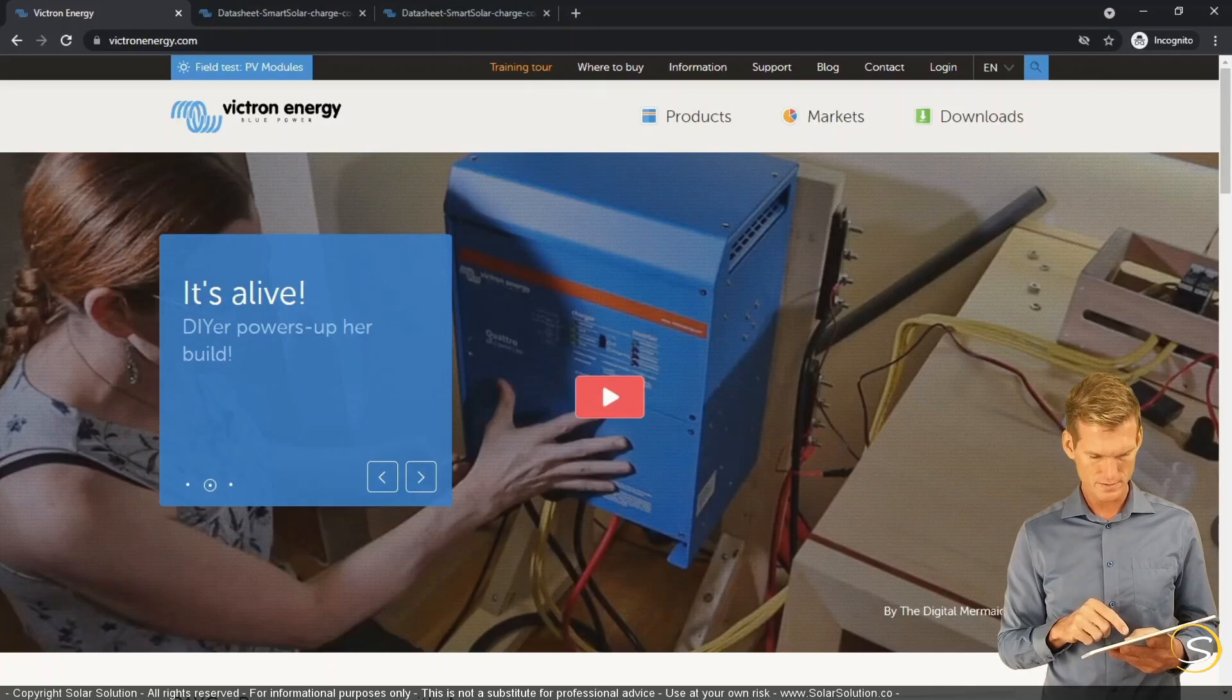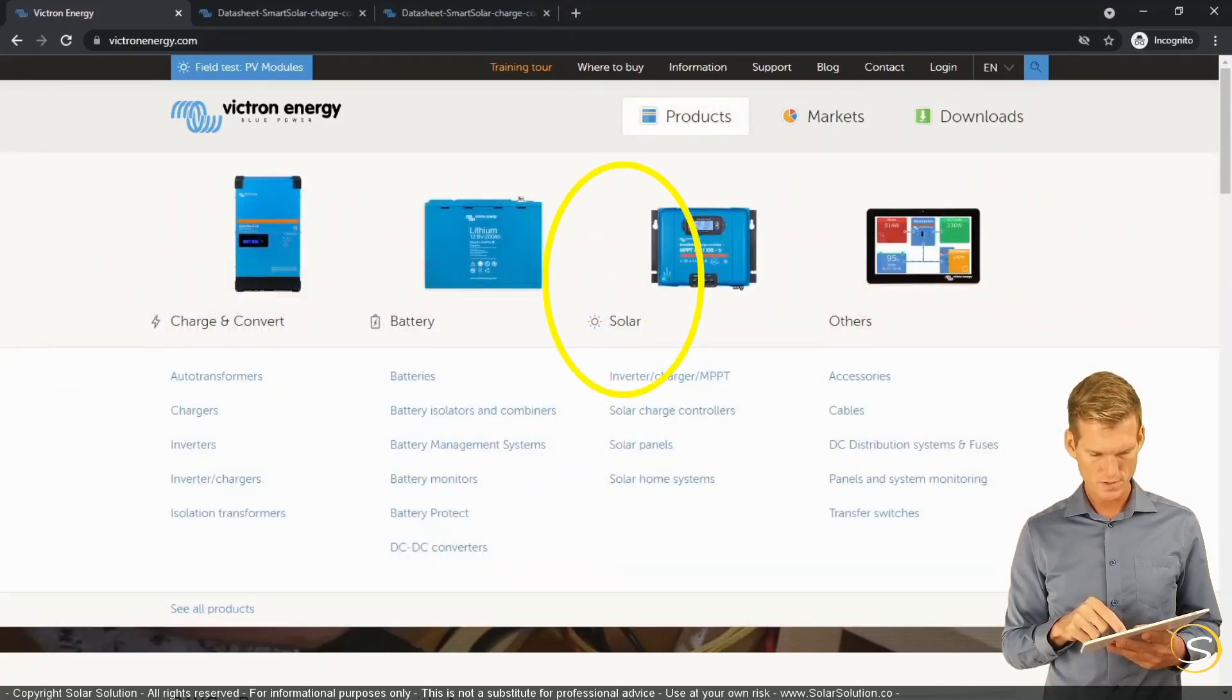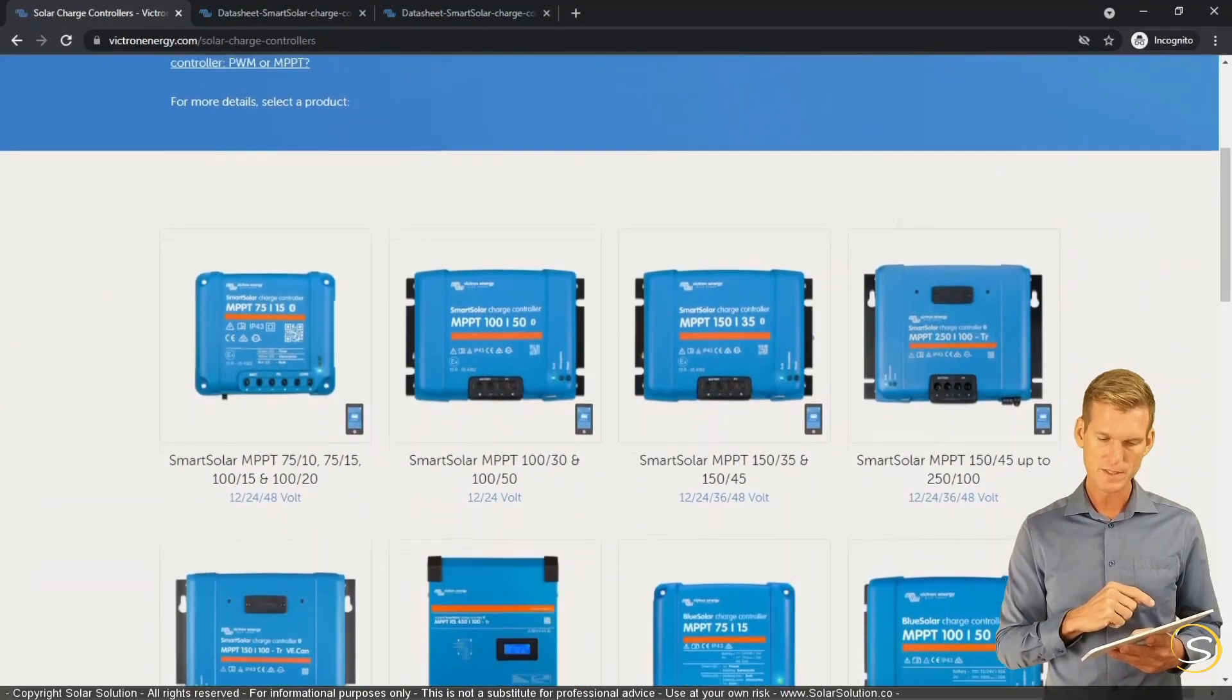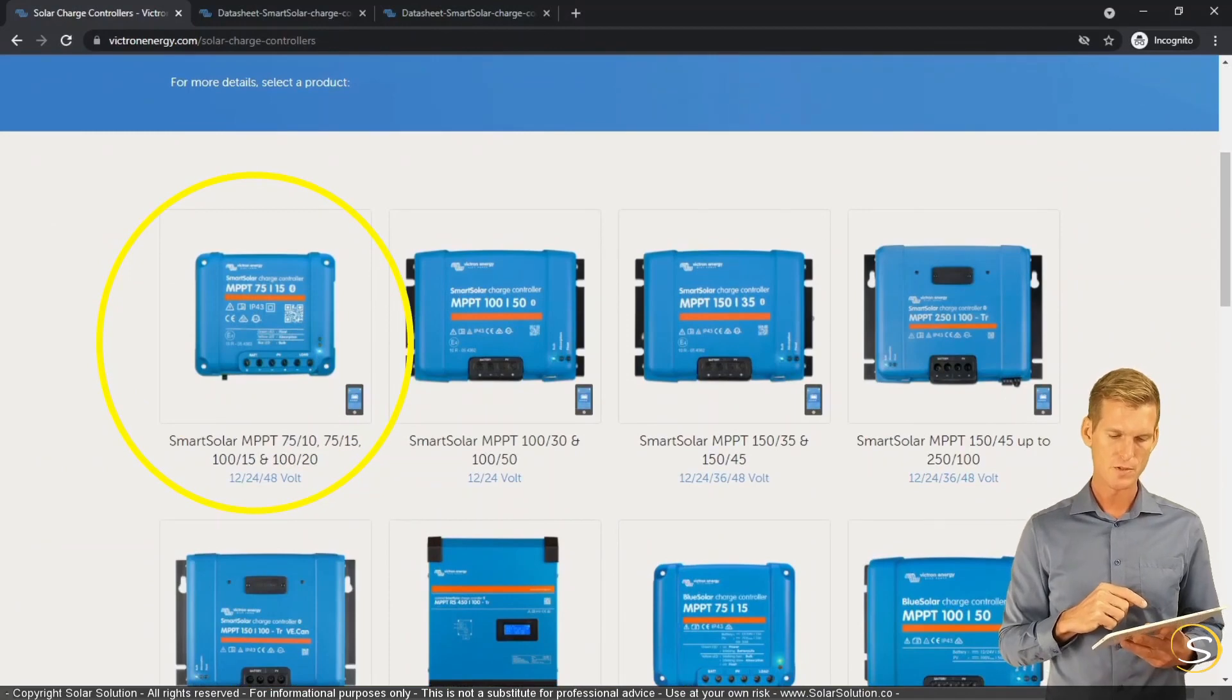I'm going to products, to the third column, solar. And there are the solar charge controllers. And I'm selecting, let's just go to the first one. It doesn't really matter for what I want to explain.